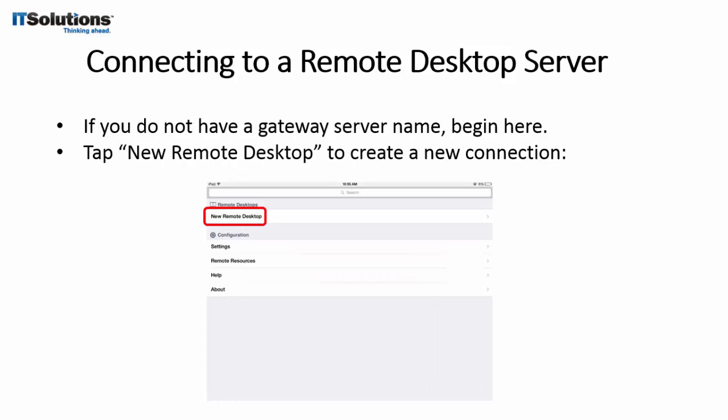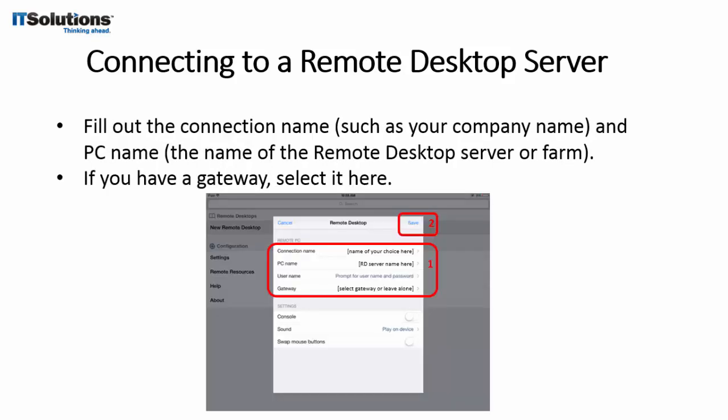Back at the main app screen, tap New Remote Desktop. Enter a connection name, which is an arbitrary name to remind you what this remote desktop server is. For PC name, enter the name of your remote desktop server. If you have a gateway server, select it. When done, click the Save button at the top right. Back at the main app screen, you should now see the name you entered a moment ago. Tap it to connect to the remote desktop server.